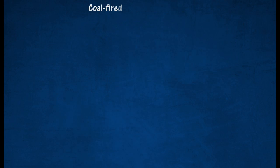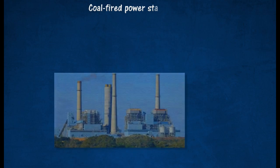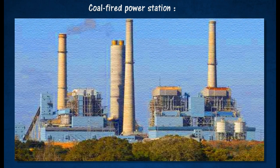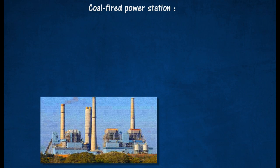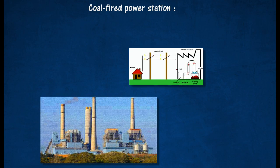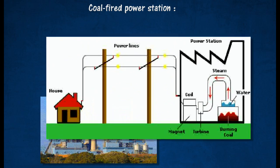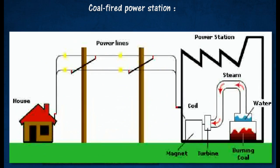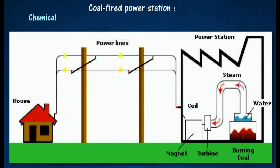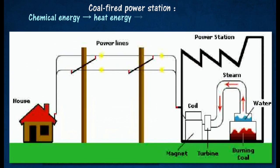In a coal-fired power station, energy obtained by burning coal is used to turn water into steam at high temperature and pressure. The steam produced is used to drive the turbines, which in turn drive the generators to produce electricity.